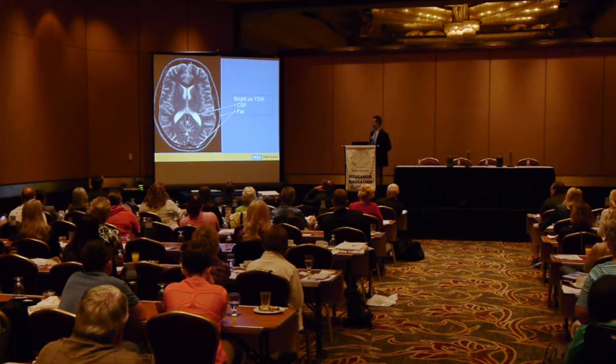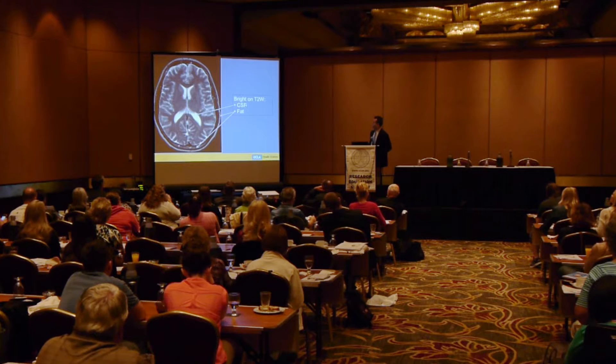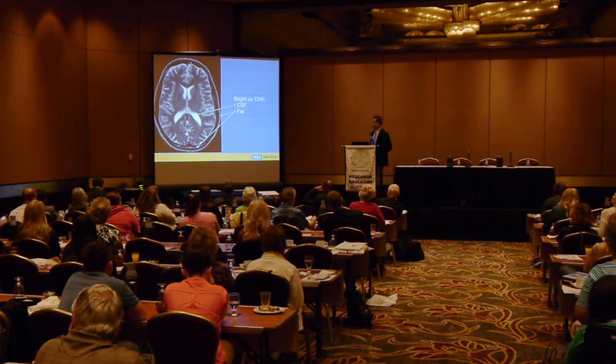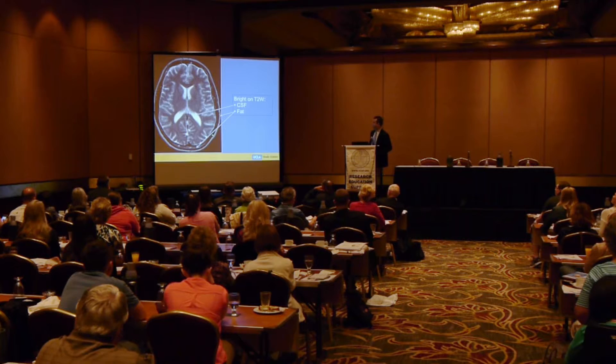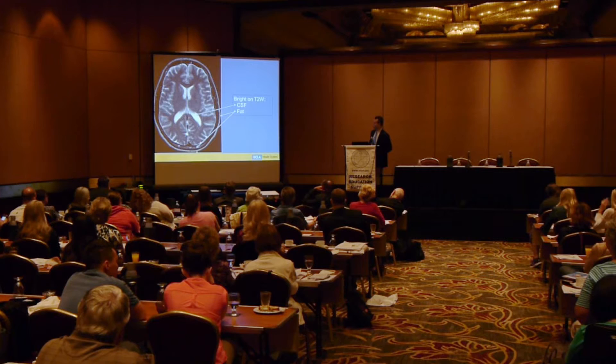On T2, the things that are bright are CSF or any fluid. In the ventricles here we have the lateral ventricles, and you can see there's fluid in the cerebral sulci. The other thing that's bright on T2 is fat. The two places we have fat in the head are the subcutaneous fat — this rim of signal around the outside of the head — and a little bit of fat in the bone marrow, which also turns out bright on a T2-weighted sequence.